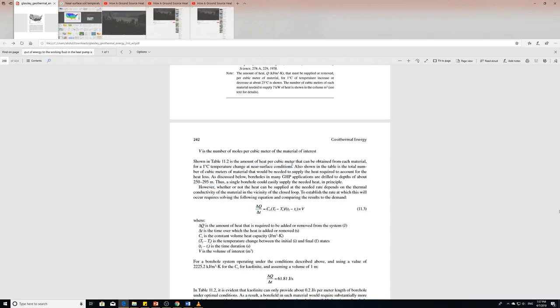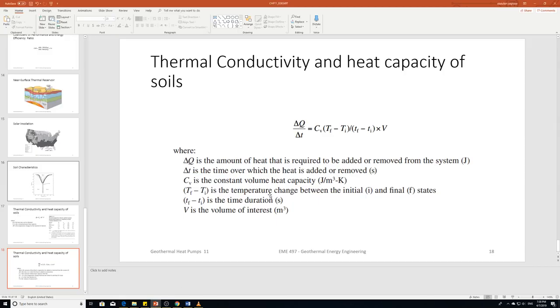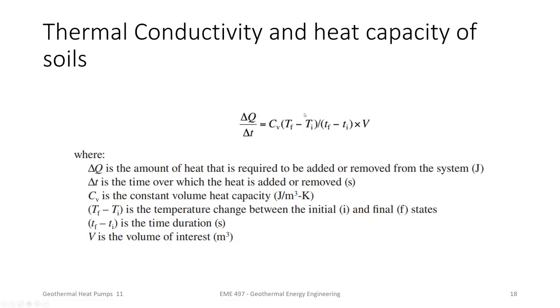Whether or not the heat can be supplied at the needed rate depends on the thermal conductivity of the material in the vicinity of the closed loop. To establish the rate at which this will occur requires solving this equation, which is what I included. Where delta q is the amount of heat that is required to be added or removed from the system. Delta t is the time over which the heat is added or removed into cv, which is going to be the constant volume heat capacity. Final temperature minus initial temperature between states and then over the time, final time and initial time, all into the volume of interest.